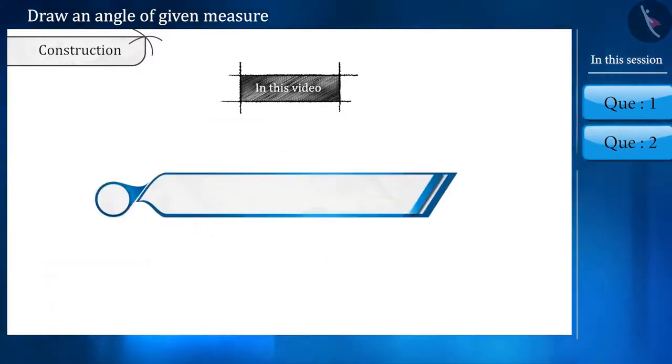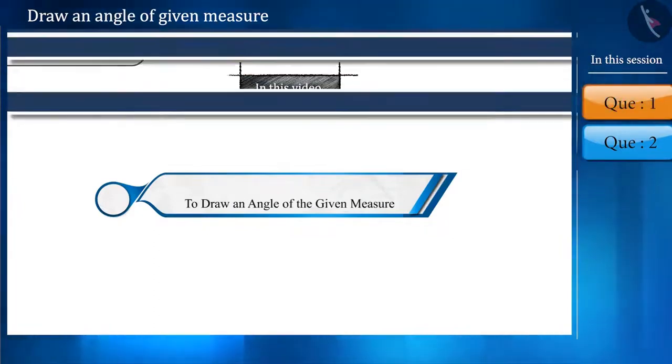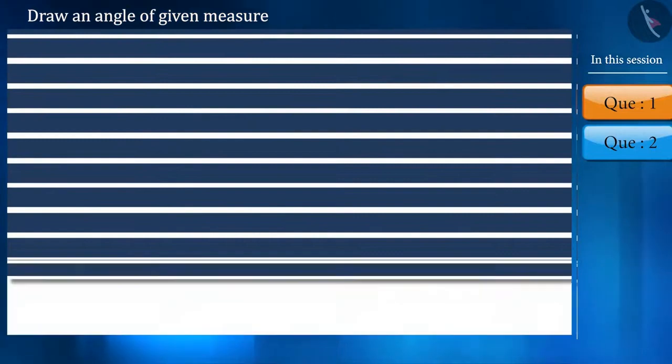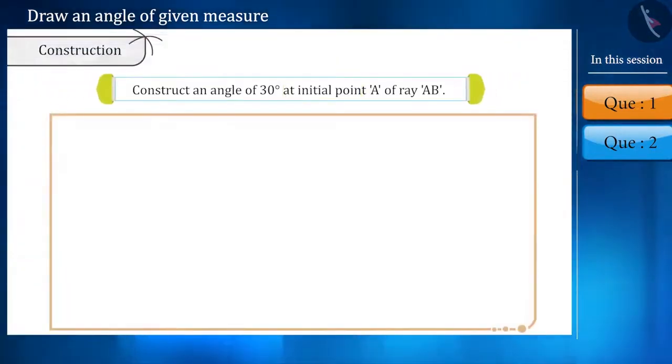In this video, we are going to learn about how one can draw an angle of a given measurement. So let us begin. The question is that, from the initial point of the ray AB, construct an angle of 30 degrees.